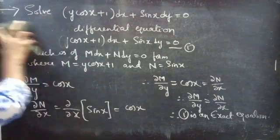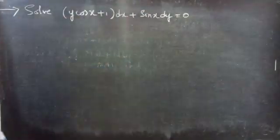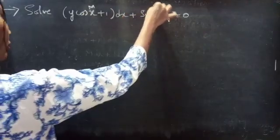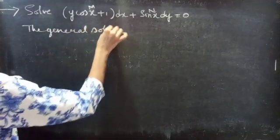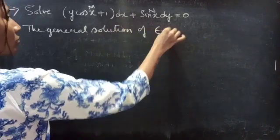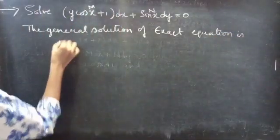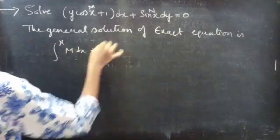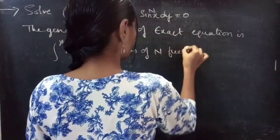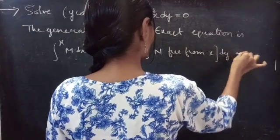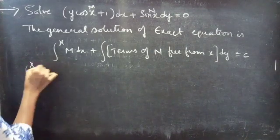Now we will find the general solution of the given exact equation. We know that the general solution of the exact equation is given by: the integral over x of M dx, plus the integral of terms of N free from x dy, equals constant c.